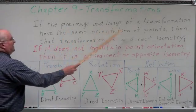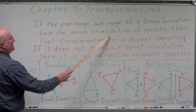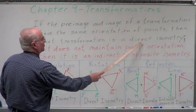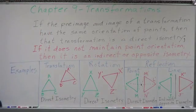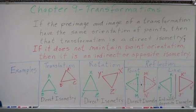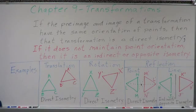If the pre-image and image of a transformation have the same orientation of points, then that transformation is called a direct isometry. Isometry means it maintains congruence — specifically, it maintains four properties: betweenness of points, collinearity, angle measurement, and distance measurement.